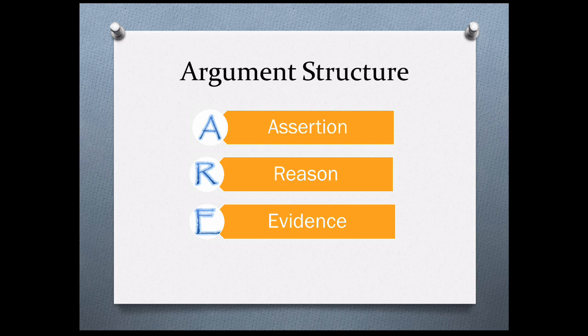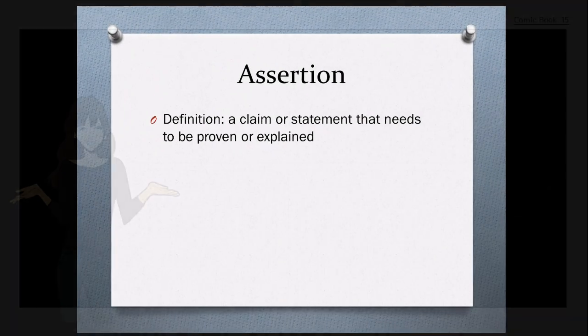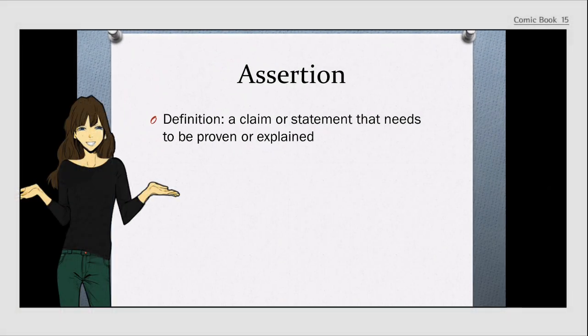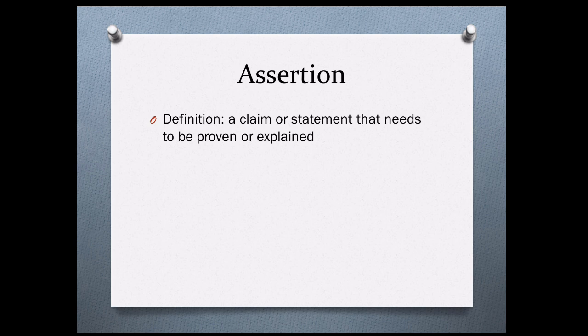We'll now begin with the A — the assertion part of the argument. The definition of an assertion is a claim or statement that needs to be proven or explained. Basically, it's the idea that you want to try to make when creating an argument.